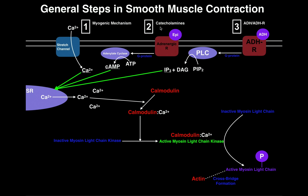The second way we can activate smooth muscle is through catecholamines such as epinephrine. Many smaller blood vessels — arterioles — are sensitive to epinephrine. When epinephrine binds to receptors, it induces the smooth muscle to contract. Epinephrine functions through what's called an adrenergic receptor. When epinephrine binds to the adrenergic receptor, you get activation of a G protein, which in turn activates the enzyme adenylate cyclase. Adenylate cyclase converts ATP into cyclic AMP.